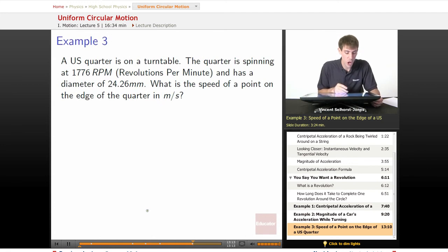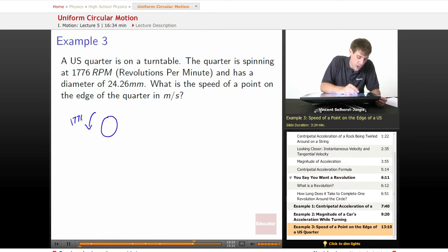Example three, final example. We've got a US quarter on a turntable. The quarter is spinning at 1776 RPM (revolutions per minute) and has a diameter of 24.26 millimeters.